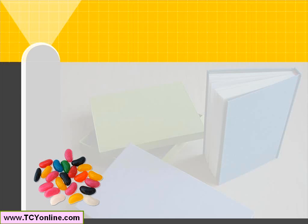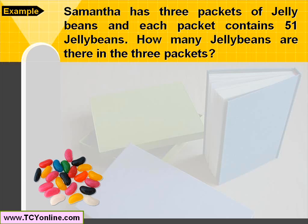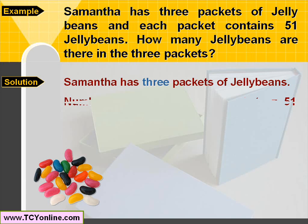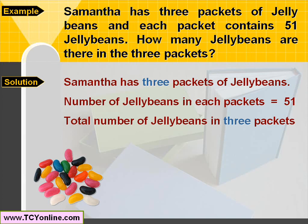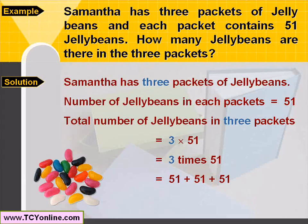Let's take an example to understand this. Samantha has three packets of jelly beans and each packet contains 51 jelly beans. How many jelly beans are there in total? Since there are 51 jelly beans in each packet, the total number in three packets will be three times 51, which means we add 51 itself three times: 51 plus 51 plus 51, giving a total of 153. So three times 51 is simply 153.